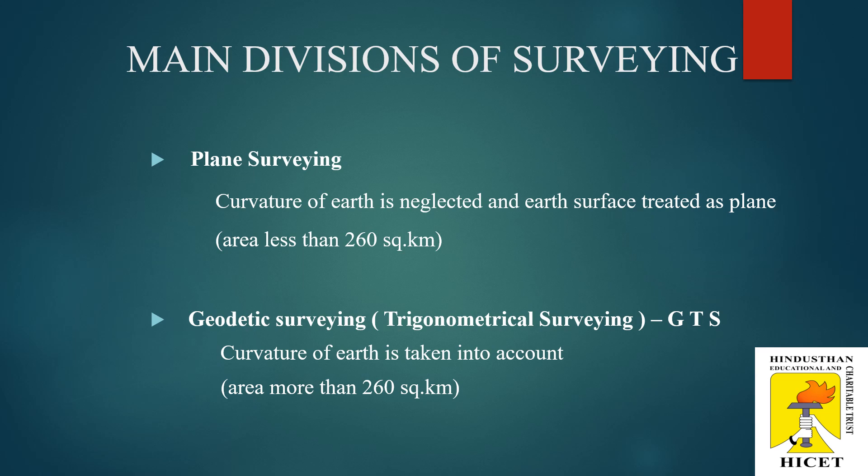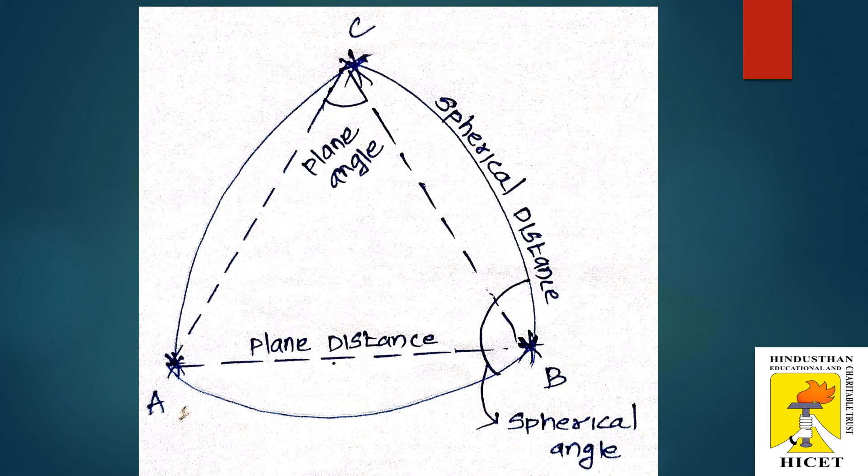On the next slide, you can see lines between A and C having different values in two different manners. In a spherical manner, it has a maximum length, and the plane distance may have a different length. The variation between a spherical and a plane survey can be clearly identified by this figure. Thank you.